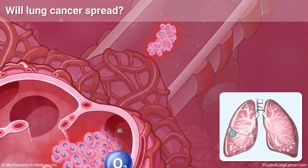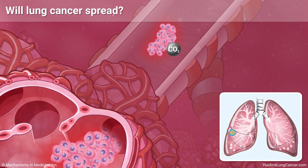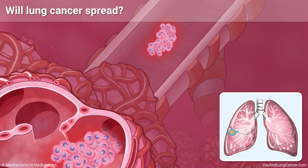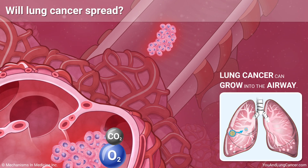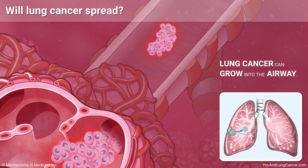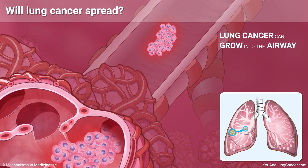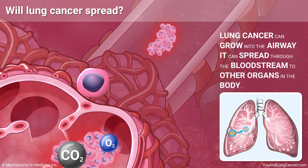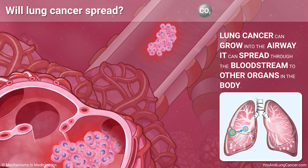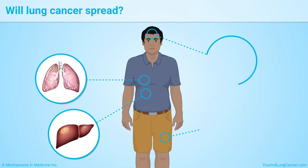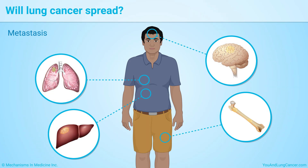Lung cancer can be dangerous, even if it does not spread. It can grow into important structures in the chest, such as the airway. Or, more commonly, it can spread through the bloodstream to other organs in the body. A cancer that has spread to another site is called a metastasis.